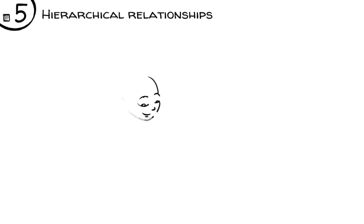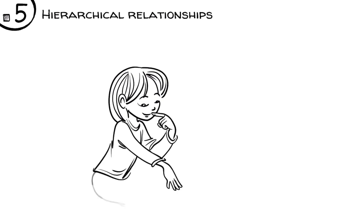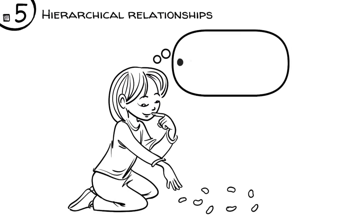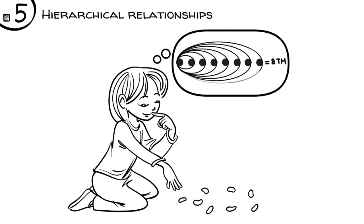Hierarchical relationships. As children construct order, they count the objects as follows – one, two, three, four, five, six, seven, and eight. As they do that, the number eight represents the eighth place in the order.